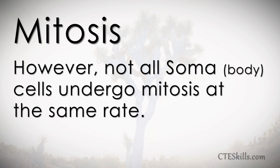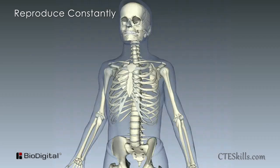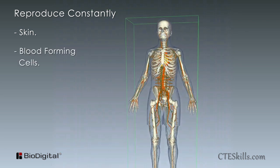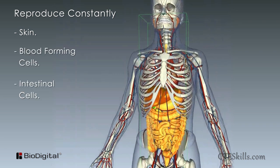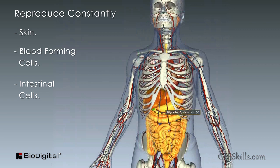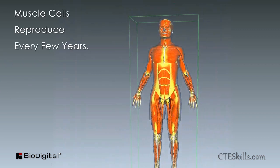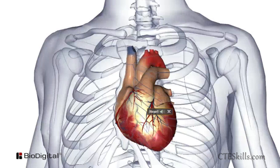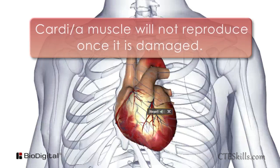However, not all soma or body cells undergo mitosis at the same rate, and some don't even reproduce ever again. As an example, skin, blood forming cells, and intestinal cells reproduce constantly. Whereas muscle cells are every few years, except for the cardiac or heart muscle — the cardiac muscle will not reproduce once it's damaged.